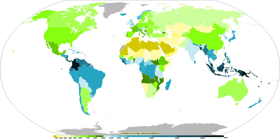The likelihood or probability of an event with a specified intensity and duration is called the return period or frequency. The intensity of a storm can be predicted for any return period and storm duration from charts based on historic data for the location. A 1-in-10-year storm describes a rainfall event which is rare and only likely to occur once every 10 years, so it has a 10% likelihood any given year. A 1-in-100-year storm describes a rainfall event which is extremely rare, occurring with a likelihood of only once in a century, so has a 1% likelihood in any given year.